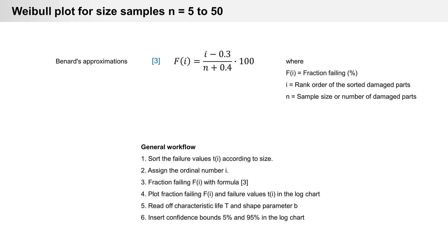Formula 3 uses i as the rank order and n as the sample size. The general workflow is: carry out the failure test, sort the values ascending, assign ordinal number i from 1 to the maximum sample size, calculate fraction failing with formula 3, plot fraction failing and failure values t in a log chart, then read characteristic life and shape parameter B, and finally insert confidence bounds to check.